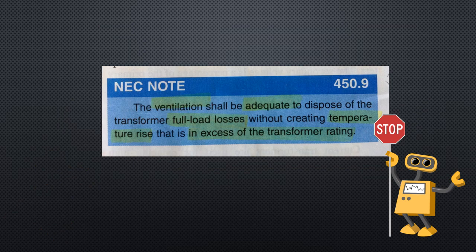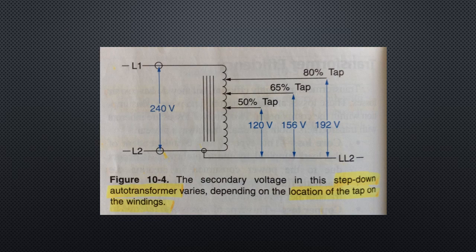NEC Note 450.9: Ventilation shall be adequate to dispose of the transformer full load losses without creating a temperature rise in excess of the transformer rating. Liquid insulated transformers are heavier than comparable dry type transformers. Extra precautions must be taken to check for leaks. Ascarel-filled transformers are no longer used due to environmental hazards and have been replaced with less flammable liquid insulated transformers whose insulating liquid may burn, but flames will not spread from the point of ignition.